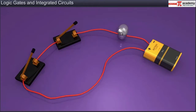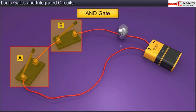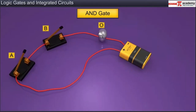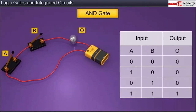Here is a circuit representing an AND gate. An AND gate has two or more inputs. The two switches A and B represent two inputs, and the bulb O represents the output of the logic gate. When both switches A and B are open, no current flows from them, so both inputs are zero. The bulb in this case remains off, hence the output is also zero.